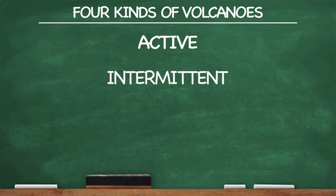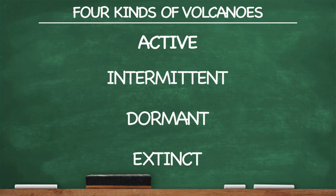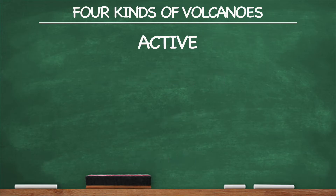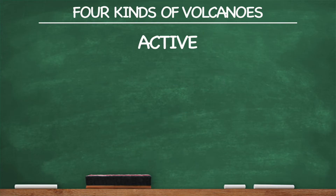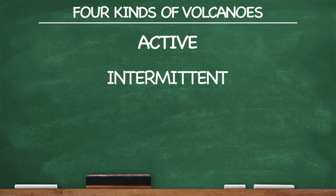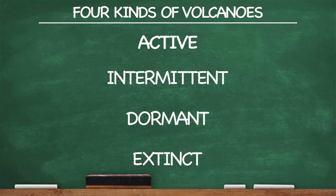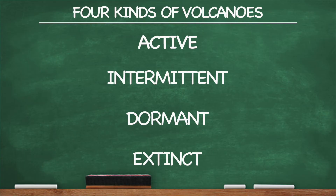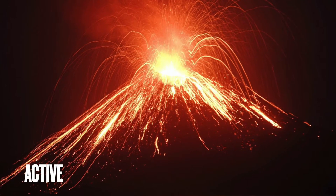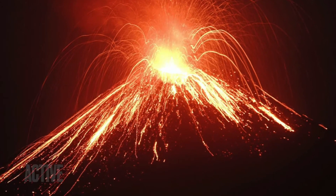Active, intermittent, dormant, and extinct. Active, intermittent, dormant, and extinct. Yeah. All right, so those are the four kinds of volcanoes. I took it pretty slow for you.